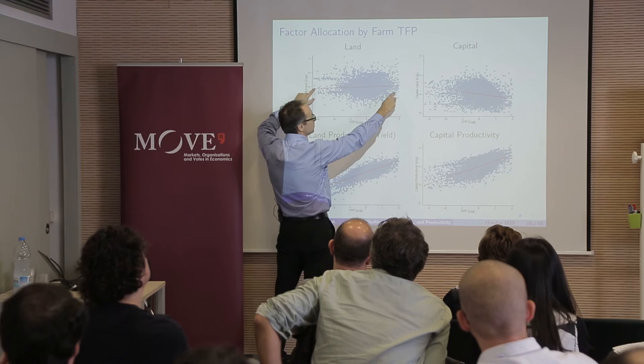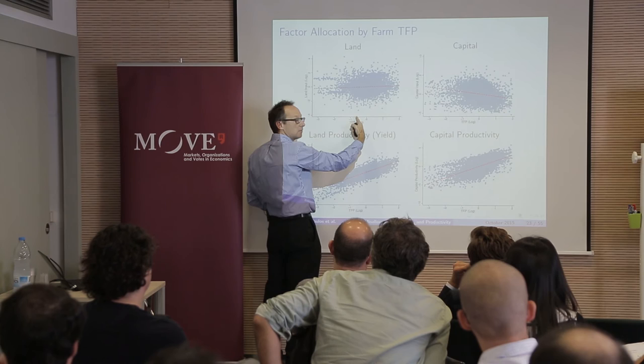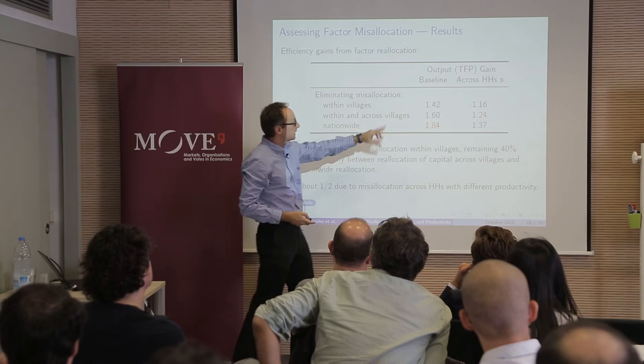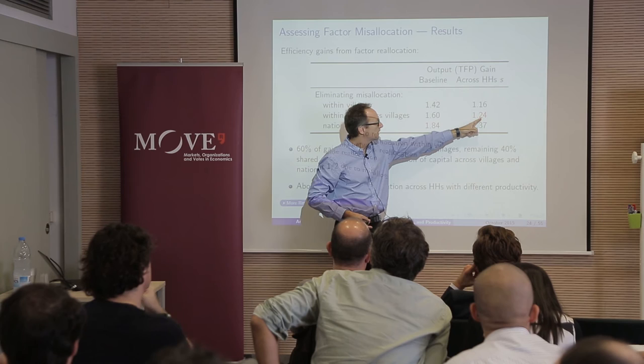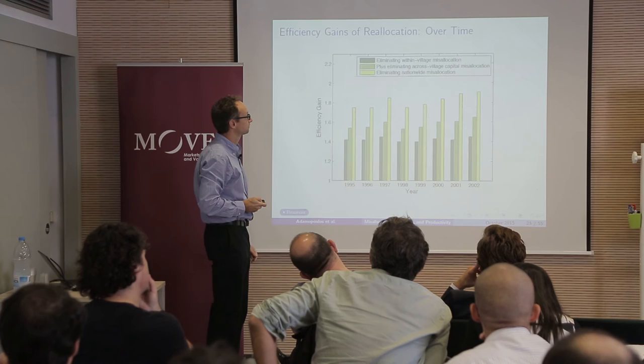You can also ask how much misallocation is between more productive and less productive farmers not having the right amount of land, versus within a particular productivity class where some have much more land than others. When you decompose these gains and ask how much comes from reallocating across the systematic component — more productive farmers getting more land — that number is 24%. About 50% of the overall gains in reallocation come from reallocating across farmers with different levels of productivity.